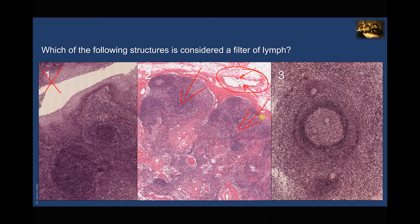As the lymph brought by these afferent lymphatic vessels washes the lymphatic follicles, the lymphocytes in the lymph node are exposed to the antigens in the lymph as it flows through the node. It first reaches the subcapsular sinus, then a trabecular sinus along the trabeculae extending from the capsule, and then the medullary sinuses. The lymph then leaves the lymph node through one or two efferent lymphatic vessels at the hilum. Hence, the lymph node acts as a filter for lymph.